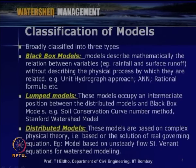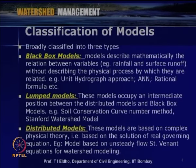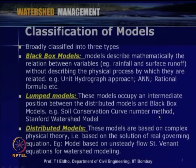The second type is lumped models, which occupy an intermediate position between distributed models and black box models. Some aspects of physical processes are taken here — not all, but some system principles like conservation of mass are considered: inflow minus outflow equals change in storage. Examples include the SCS curve number method and the Stanford watershed model; mass balance type models are all lumped models.